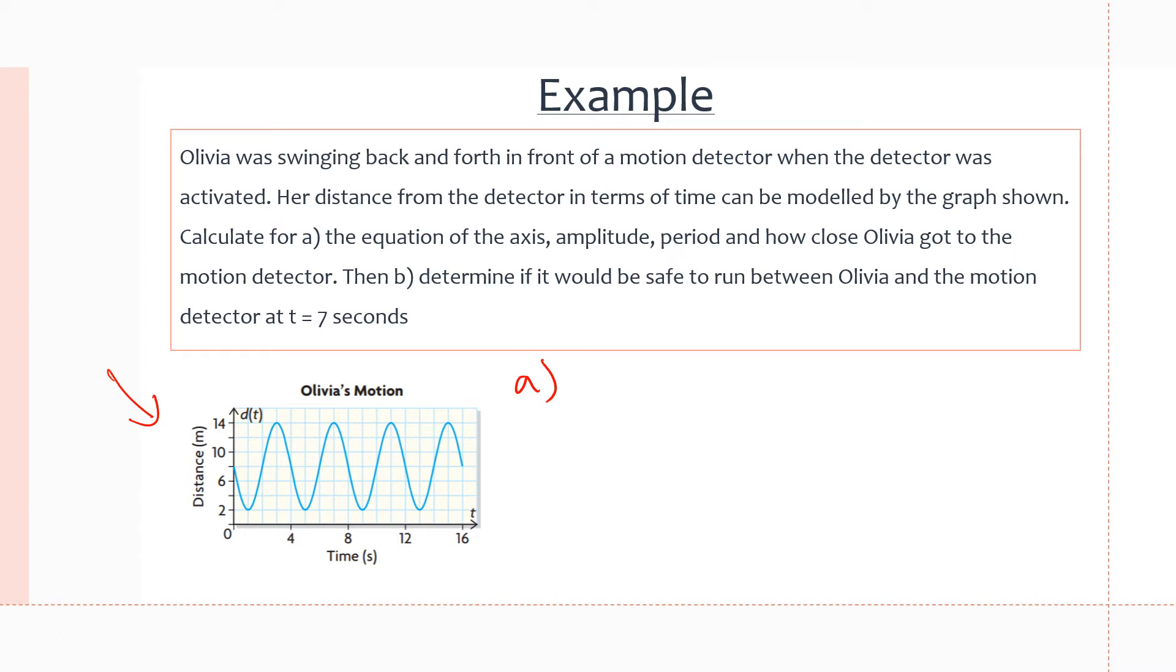For part A, we want to find the equation of the axis. The equation of the axis is y equals the max plus the min over 2. Our max value is 14 and minimum value is 2. Plugging those in: 14 plus 2 over 2, y is 16 divided by 2, which gives us 8. That's the equation of the axis, right in the middle at y equals 8, which is exactly where she starts her journey towards the motion detector.